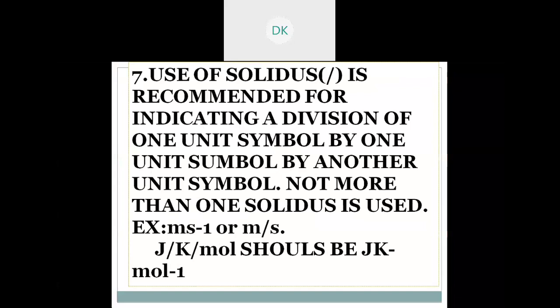Seventh rule: use of solidus is recommended for indicating a division of one unit symbol by another unit symbol. Not more than one solidus is used. Solidus means like a slash. To differentiate, we can use only one time. For example, meter second power minus one, or meter per second. See, only one solidus, like a slash. This is the type of representing and using solidus. We should not use j solidus k slash mode. We should not use this.